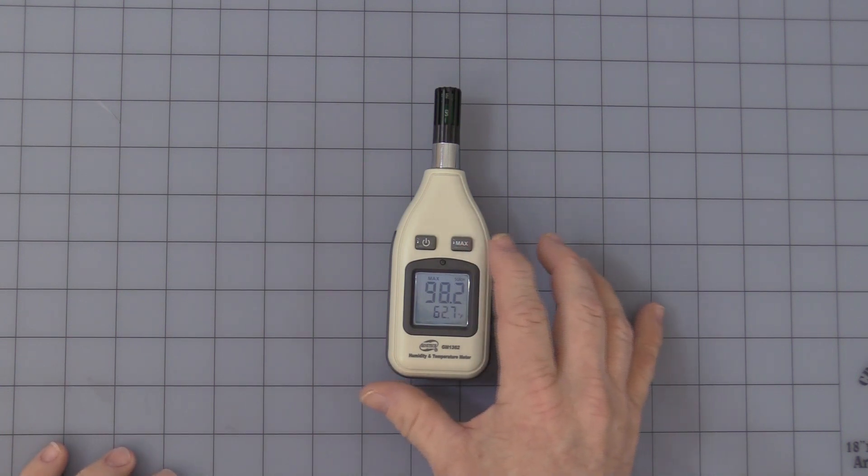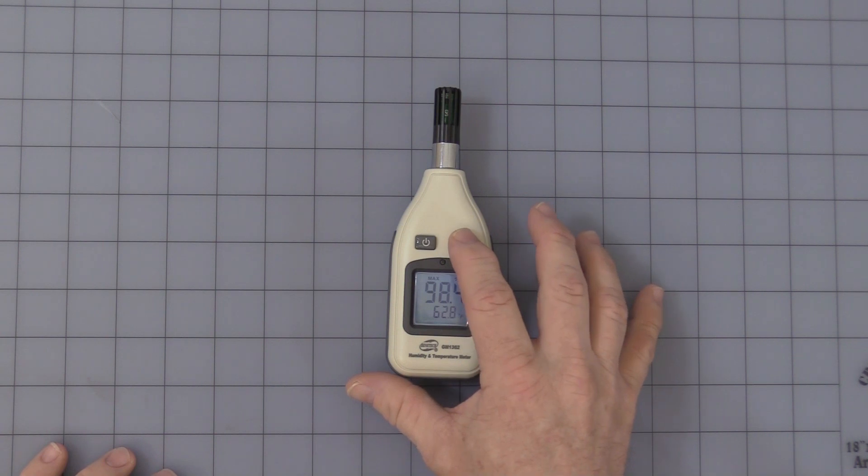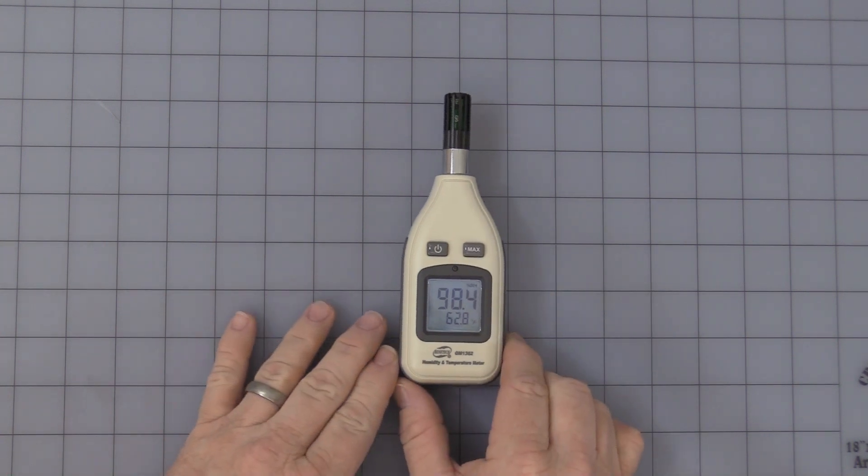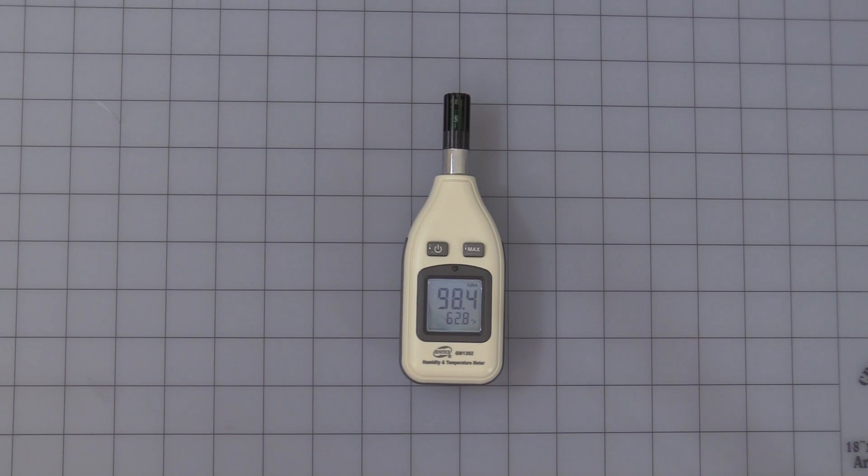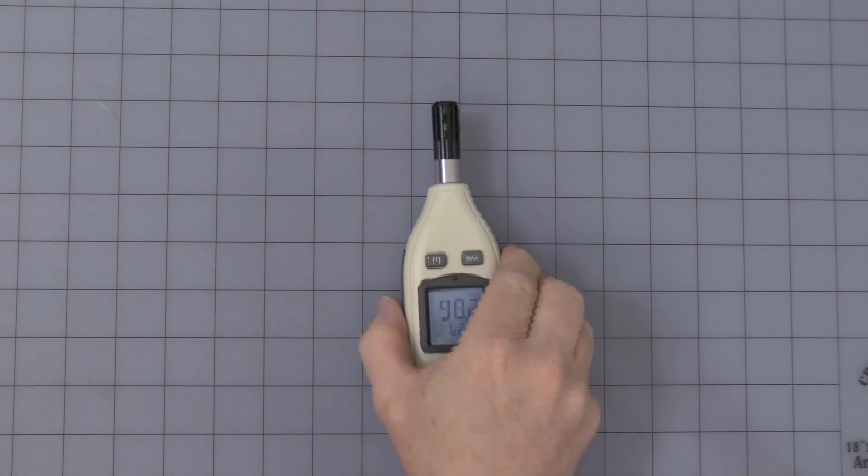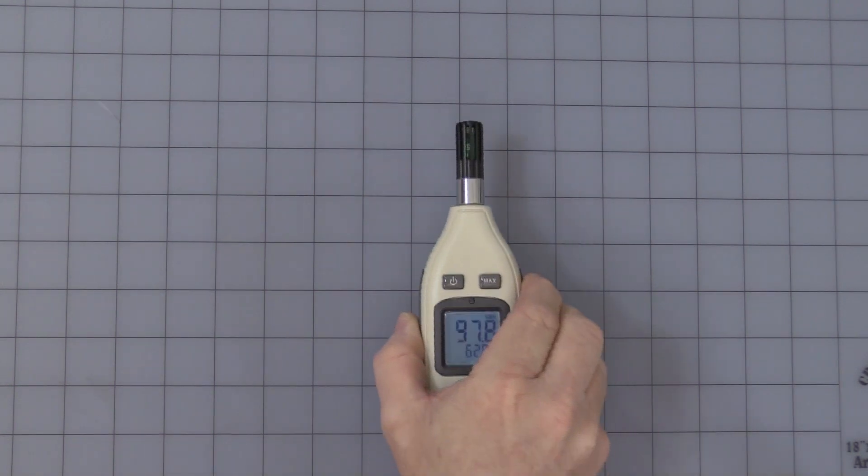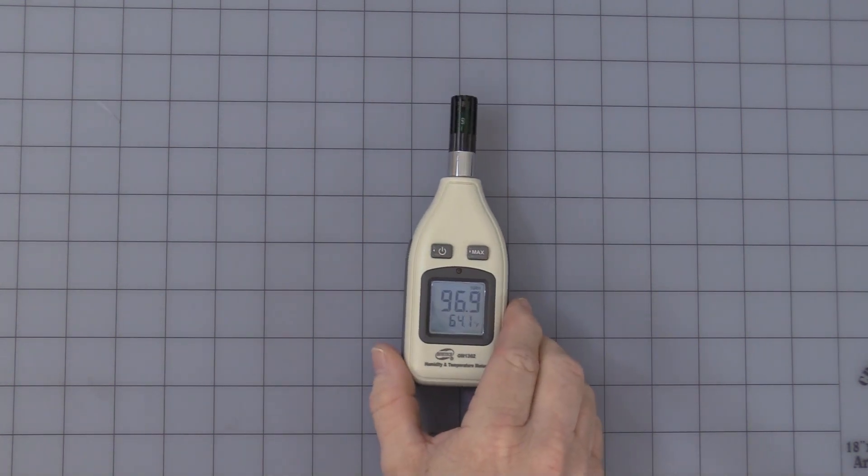Now if we were to go ahead and press and hold the max button, it goes back into regular operating mode. It's kind of high humidity right now because it was in the refrigerator and it's getting all the condensing humidity on the sensor there.